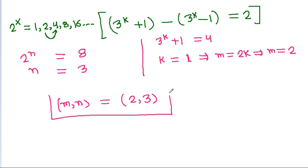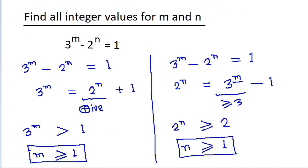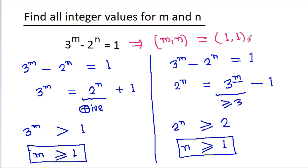So the integer solutions are (m, n) = (1, 1) and (m, n) = (2, 3).